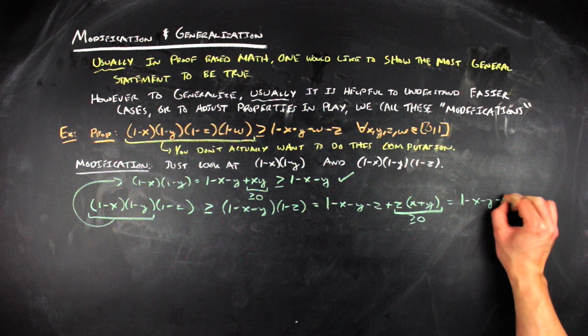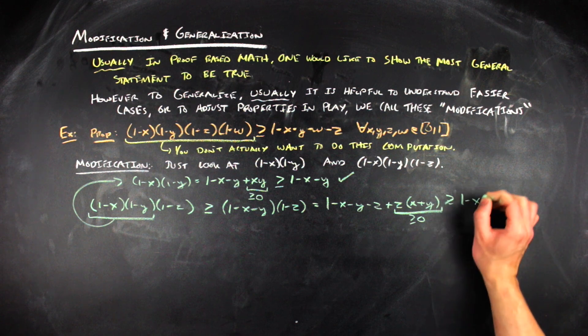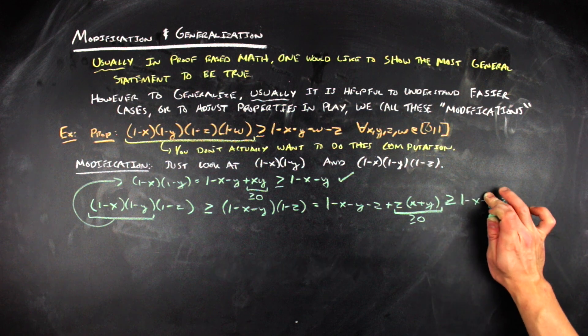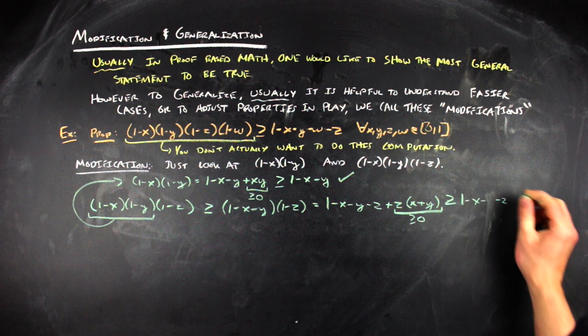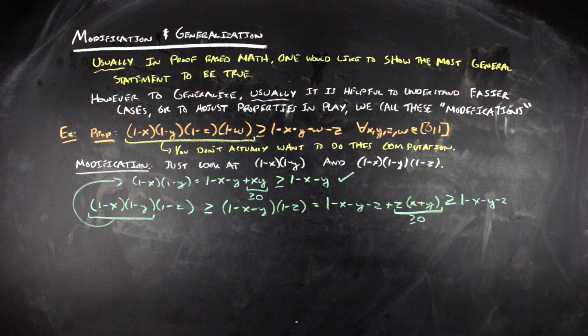Now again, because x, y, and z are all within the closed interval from 0 to 1, z times (x plus y) must be greater than or equal to 0. So we can go ahead and estimate that 1 minus x minus y minus z plus z times the quantity (x plus y) is greater than or equal to 1 minus x minus y minus z. And that completes the argument for the modification for three terms.